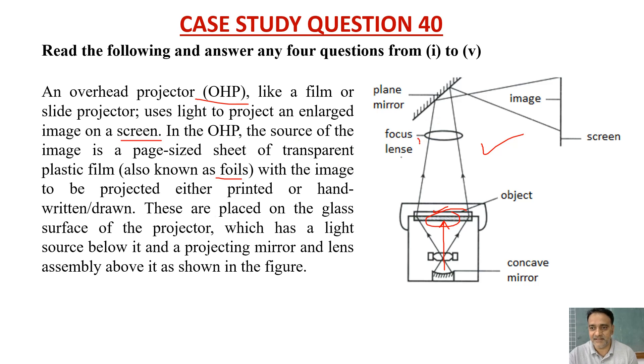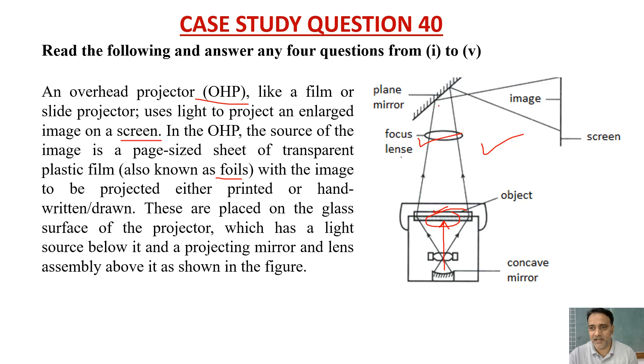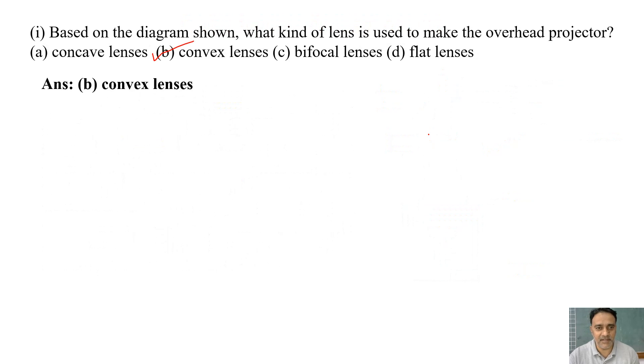This lens is a convex lens. The correct option is B, because here we are going to extend and here we are going to converge. So the correct option is B.